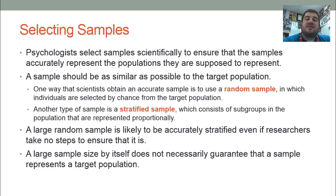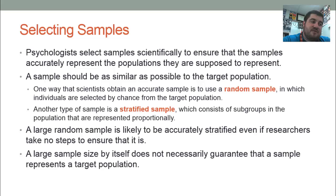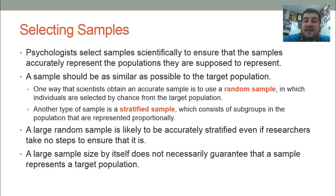We could do a random sample, in which individuals are selected by chance from the target population. We could do a stratified sample, which means that subgroups are represented proportionally. So if 48 percent of high school students are male, then 48 percent of our sample should be male. If 30 percent are freshmen, then 30 percent should be freshmen in our sample. If 10 percent are Black, then 10 percent of our sample should be Black — we need to make it look exactly like the target population it's supposed to represent.